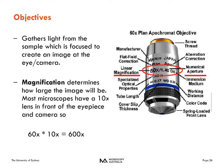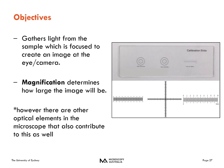The magnification determines how large the image will be. Most microscopes have a 10x lens in front of the eyepiece and camera, so multiply the value written on the objective by 10 to get your final image magnification. If you're ever curious about the actual size of your sample, you can place a calibration slide on the microscope to determine what pixel size in your image will actually be.